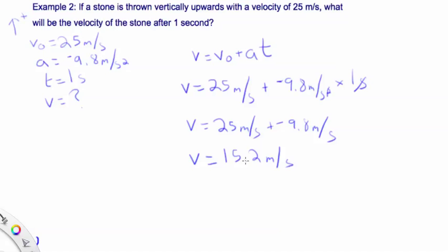Now we have to look at significant figures. Because our time is really inexactly measured — it has one significant figure — we have to round this to one significant figure. So we have to round to 20 meters per second. I know it bothers some of you because 20 m/s seems less accurate than 15.2, but you can't be more accurate than your least precise measurement. One second could be any value between 0.5 and 1.4 seconds. If they wanted a more exact number, they would have given a more exact measurement.